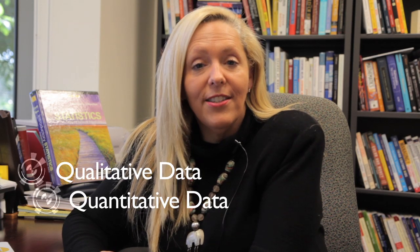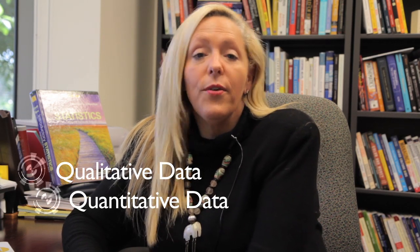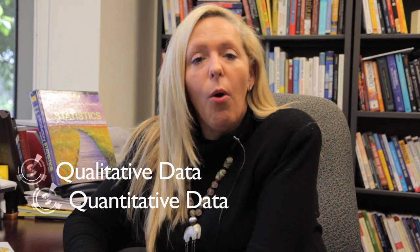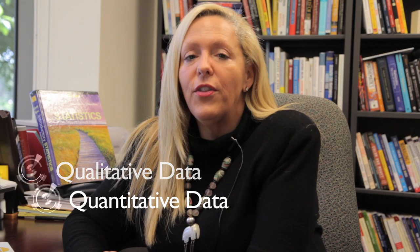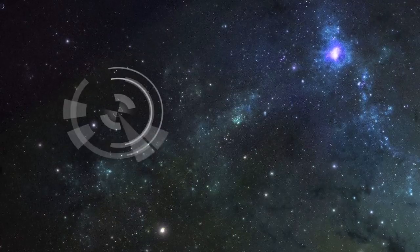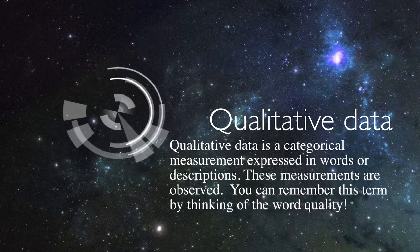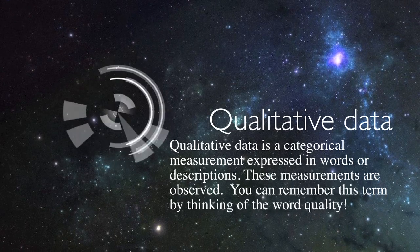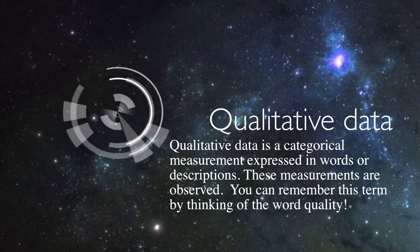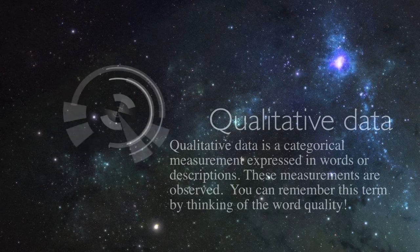The observations or data may be either qualitative or quantitative. For example, if I'm studying online students, I might want to know whether there are more males or more females, or possibly I want to know about the GPAs of all the students who take online classes versus traditional classes. Qualitative data is a categorical measurement expressed in words or descriptions. These measurements are observed.